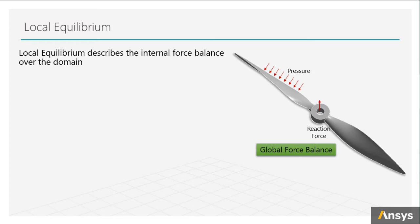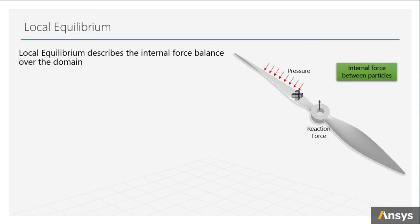In solid mechanics, to find deformation, stress, and strain of a body, instead of looking at the global force balance, we need to solve the local internal force balance. Solving the local force balance equilibrium will lead us to the distortion of a body. And the global force balance is the consequence that we need to verify after the problem is solved.